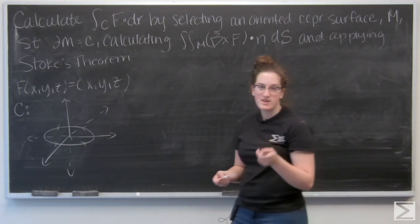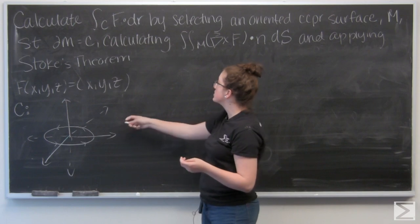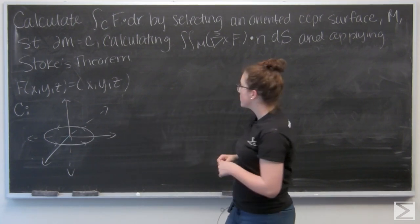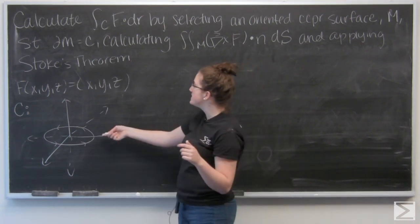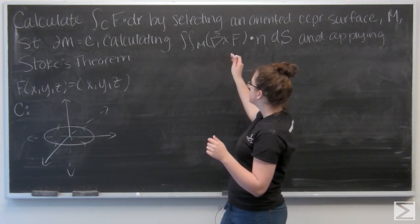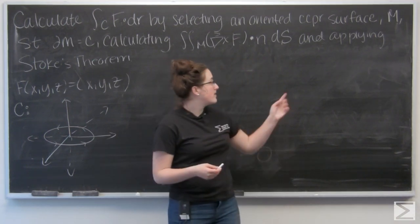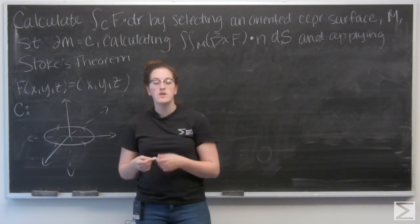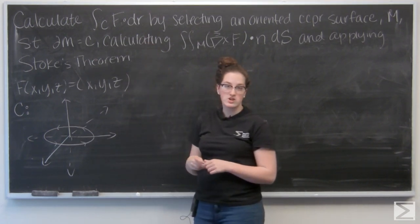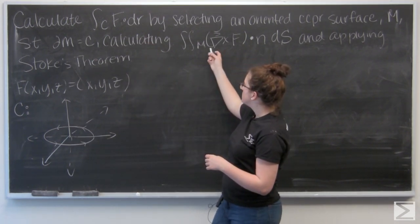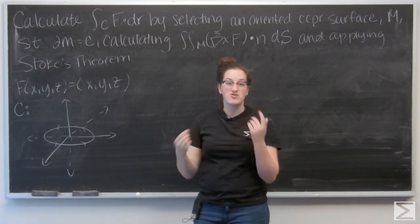In this question, I want to calculate the line integral of F along a given curve C by selecting an oriented surface M such that the boundary of M is curve C, calculating the flux of F through that surface M, and applying Stokes' theorem. Stokes' theorem says that the line integral of F along a curve is equal to the flux of F through a surface whose boundary is that curve.